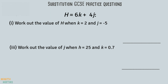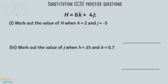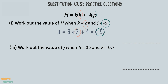For this question we are given an equation h = 6k + 4j. The first part of the question asks us to find the value of h when k is 2 and j is minus 5. We need to rewrite the equation with 2 in place of k and minus 5 in place of j.